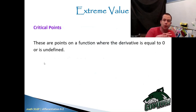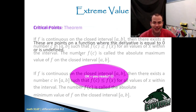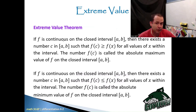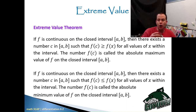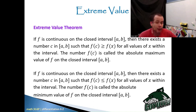Critical points are points on a function where the derivative is equal to zero or the derivative is undefined — it doesn't exist. Now let's take a look at the extreme value theorem. If F is continuous on the closed interval A to B, then there exists a number C in that interval such that F of C is greater than or equal to F of X for all values of X within the interval. So if we have a closed interval, by default we will have an absolute maximum.